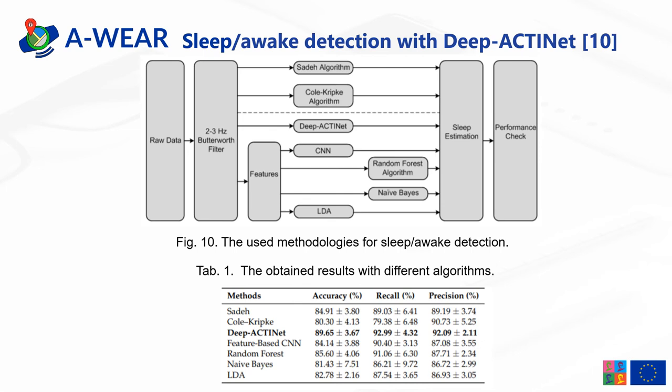The next application of neural networks for analyzing sleep is presented. The authors used Deep ActiNet, which contains a 1D-CNN and LSTM for sleep-wake status detection. They compared this method with other machine learning algorithms such as random forests, Naive Bayes, linear discriminant analysis, and feature-based convolutional neural networks. The proposed model outperformed the rest of the algorithms and achieved 89.65% accuracy.